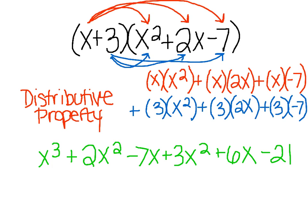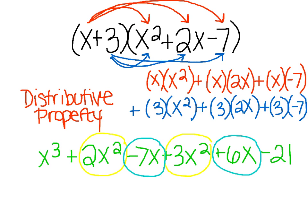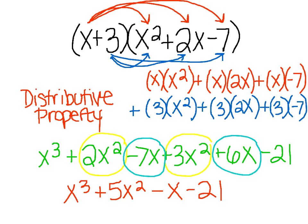This is perfect except that we still have things that need to be simplified. We have 2x squared and positive 3x squared, and we also have negative 7x and positive 6x. We need to combine those like terms. Our final answer is x cubed, 2x squared plus 3x squared is 5x squared, negative 7x plus 6x is negative x, and then we have negative 21.